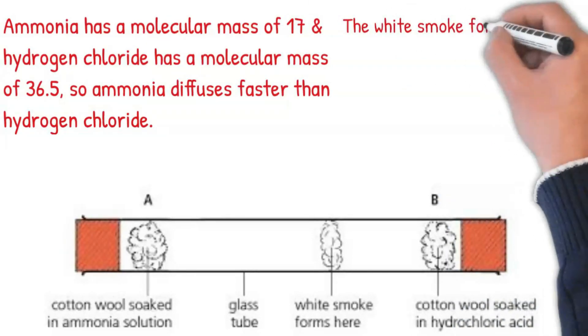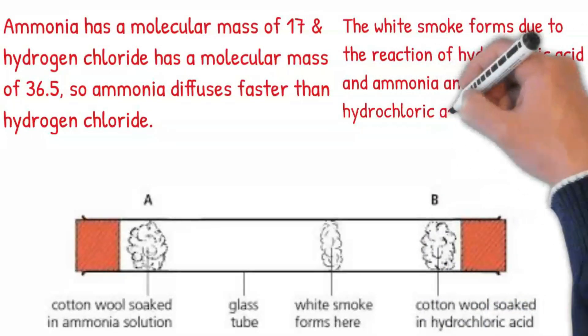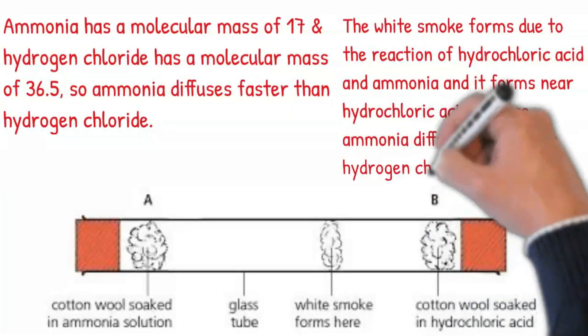The white smoke forms due to the reaction of hydrochloric acid and ammonia, and it forms near hydrochloric acid because ammonia diffuses faster than hydrogen chloride.